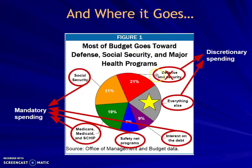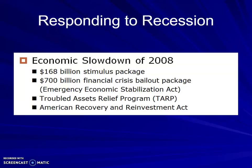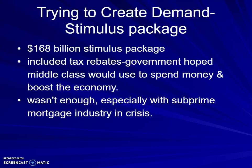We know we have discretionary spending and mandatory spending. In response to recession, in 2008 we had the economic slowdown. There was a $168 billion stimulus package and $700 billion to bail out banks. We also had the Troubled Assets Relief Program, trying to get people out of foreclosures, and the American Recovery and Reinvestment Act — all pieces of trying to get out of the 2008 slowdown and trying to create demand. The stimulus package included tax rebates the government hoped the middle class would use to spend money and boost the economy.